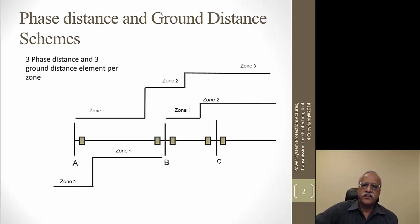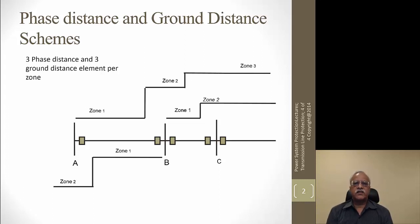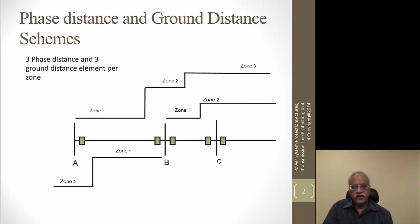Similarly, for a phase-to-phase fault element, it uses the voltage across the faulted phases Vab and the difference in currents Ia minus Ib, and takes the ratio of the two to measure the positive sequence impedance up to the fault point. The intent is to measure the positive sequence impedance up to the fault point so that when a fault occurs, irrespective of the type of fault, the relay can identify the fault location and take corrective actions accordingly.